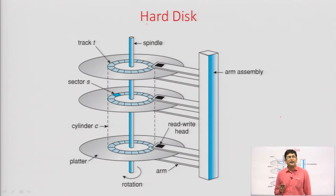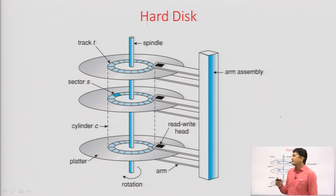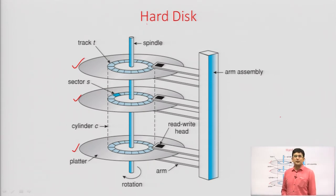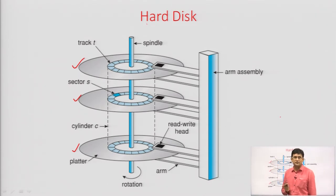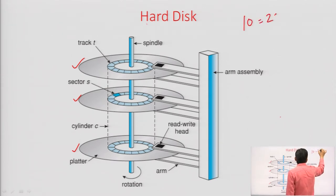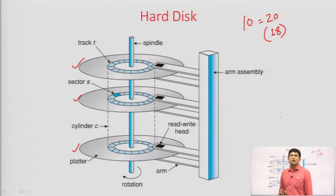This is actually the internal diagram of a hard disk. In every hard disk, there are platters — these are the plates on which the data is stored. Usually, the data is stored on both surfaces: the top and the bottom as well. In some hard disks, the topmost and bottommost surfaces are not usable; otherwise, all surfaces are usable. So if we have 10 platters, the total number of surfaces will be 20, and out of 20, it may happen that only 18 are usable and the other 2 may not be usable.